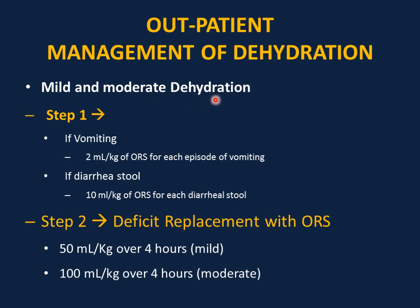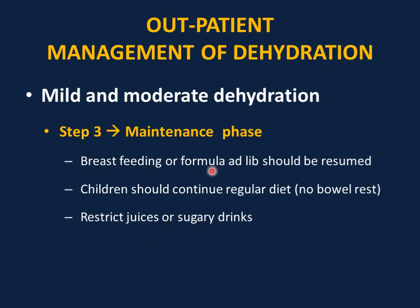Mild to moderate dehydration can be managed as outpatients, especially if the child is stable and able to drink — the ability to drink is key. Step one: for vomiting, give 2 ml per kg of ORS per episode; for diarrheal stool, give 10 ml per kg of ORS per stool to replace ongoing losses. Step two — deficit replacement: give 50 ml per kg over 4 hours for mild dehydration and 100 ml per kg over 4 hours for moderate dehydration. Step three — maintenance: resume breastfeeding or formula as soon as possible. Children should continue their regular diet with no restrictions.